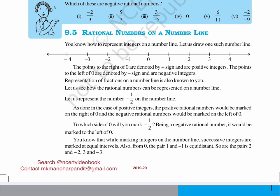Let us represent the number minus 1 upon 2 on the number line. As done in the case of positive integers, the positive rational numbers would be marked on the right of 0 and the negative rational numbers would be marked on the left of 0. To which side of 0 will you mark minus 1 upon 2? Being a negative rational number, it would be marked to the left of 0. While marking integers on the number line, successive integers are marked at equal intervals. From 0, the pair 1 and minus 1 is equidistant. So are the pairs 2 and minus 2, 3 and minus 3.